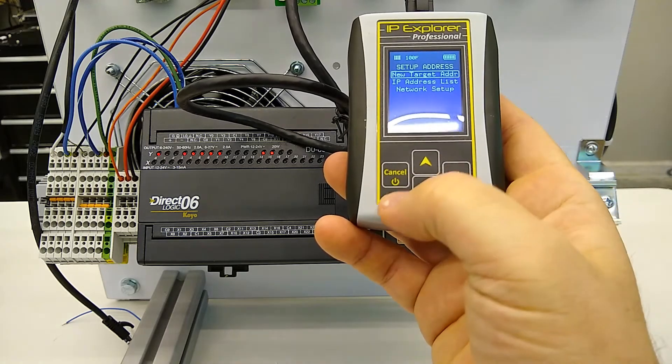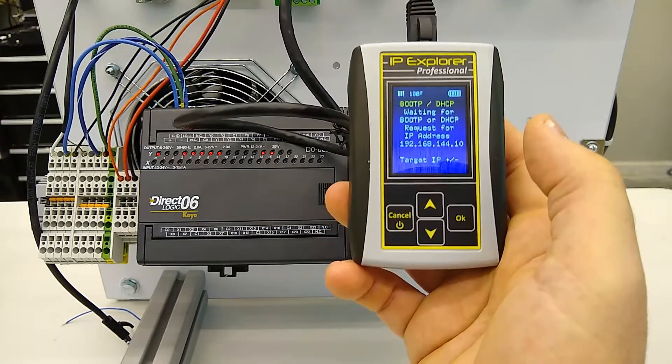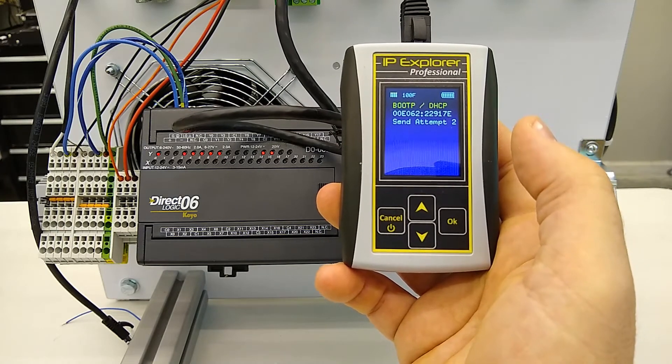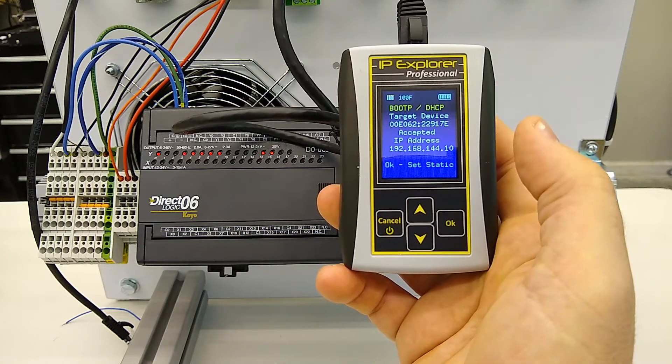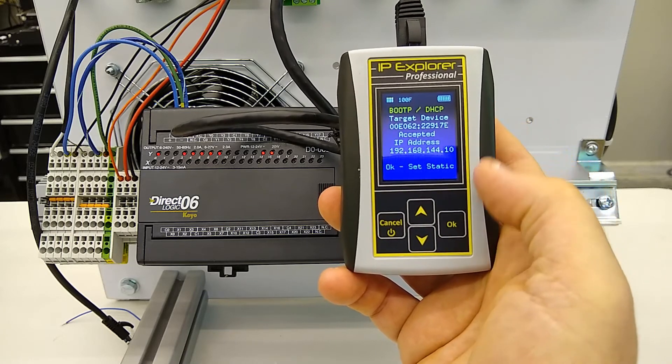Now let's go to assign address and use bootp.dhcp. Now we have assigned an address of 192.168.144.10.